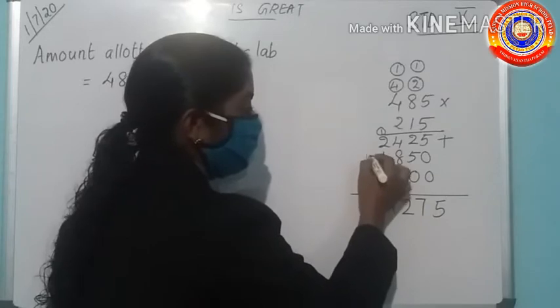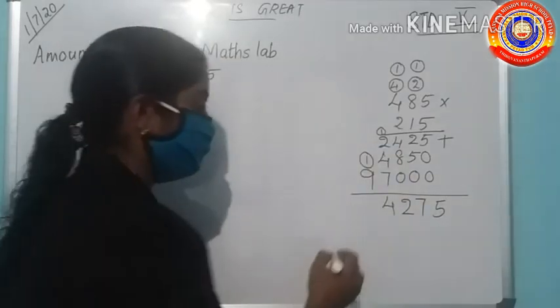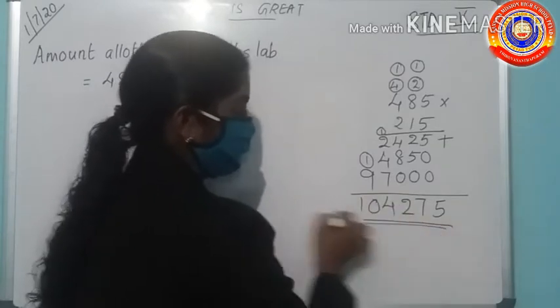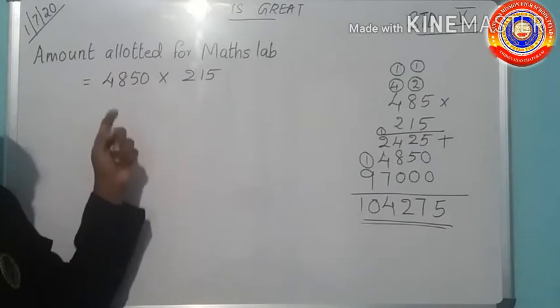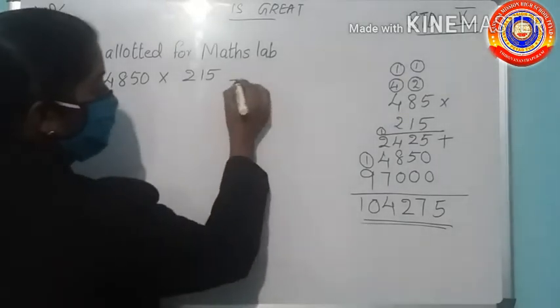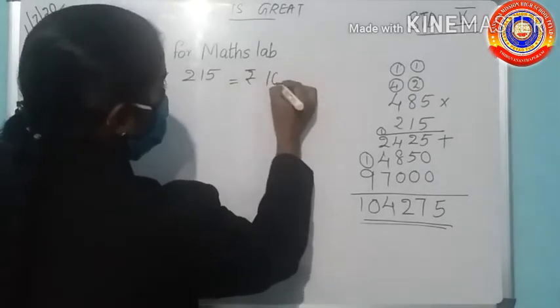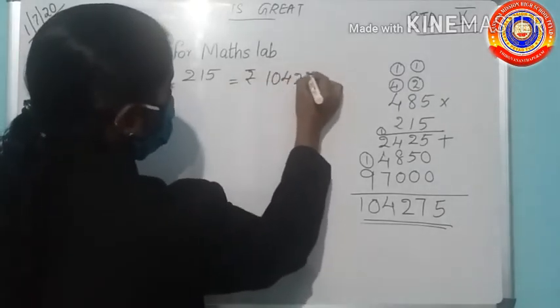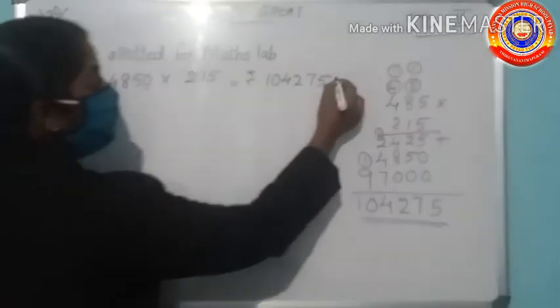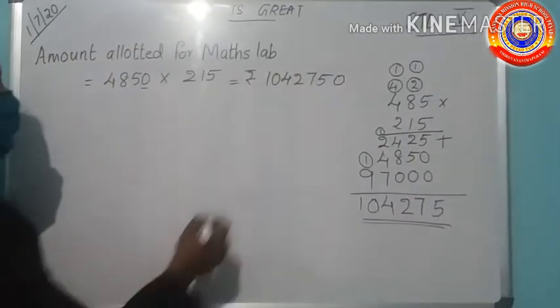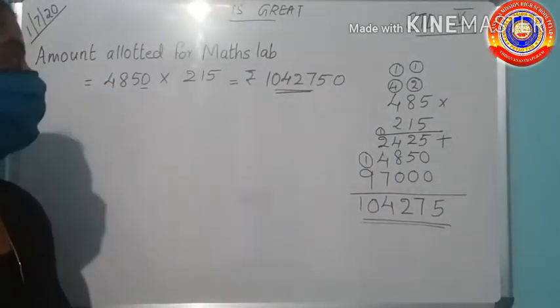4 carry over 1. Then 1 plus 9, yes it is 10. We got the answer. 4,850 into 215 equals rupees 1,042,750. Then add the 0. The number is 10,42,750.